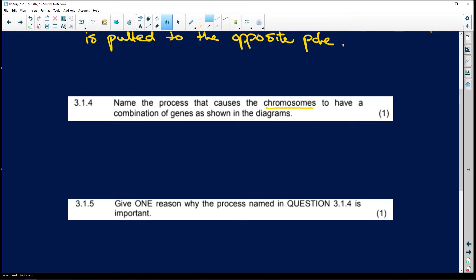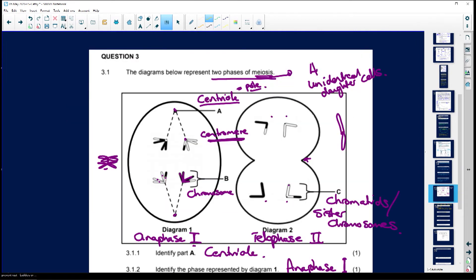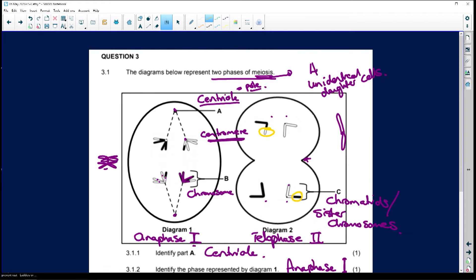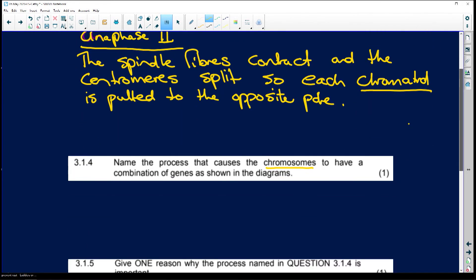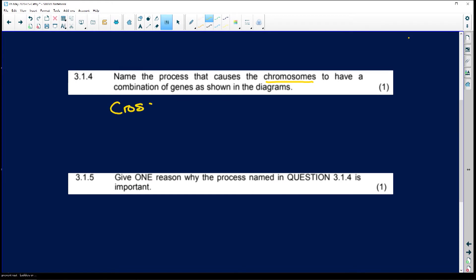Name the process that causes the chromosomes to have a combination of genes as shown in the diagrams. Let's just go back to the diagrams. It's crossing over. Look here. There's this piece here from that one is sitting here, and the rest with this part here and that part there. So they basically shared this little piece and that little piece and you can see the same happening across here. Our answer, what is the process? It's crossing over. And that happens in prophase one.